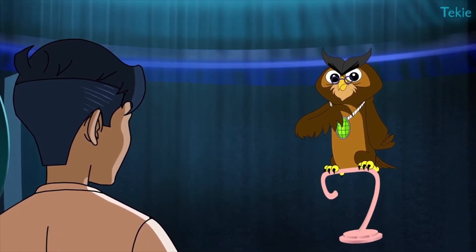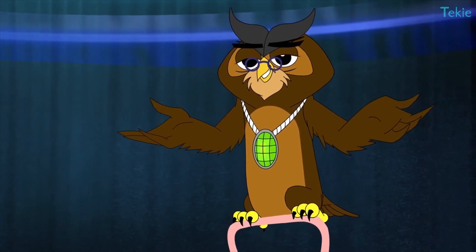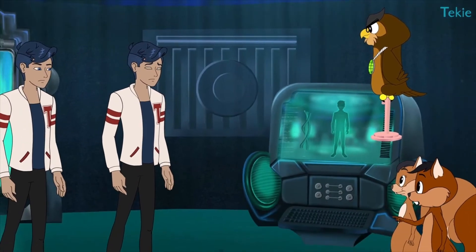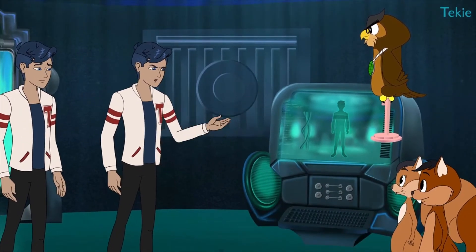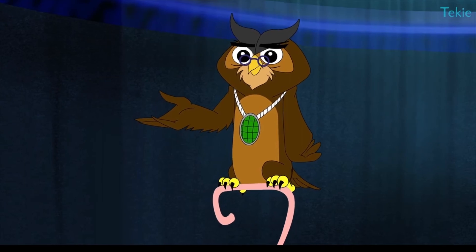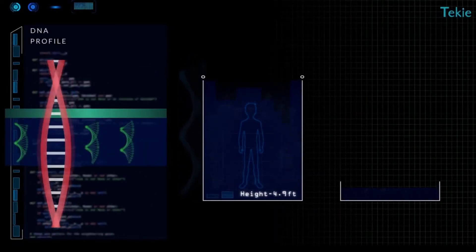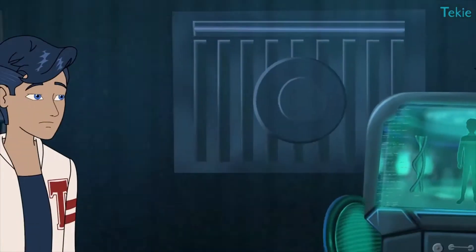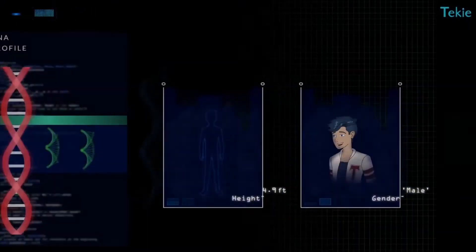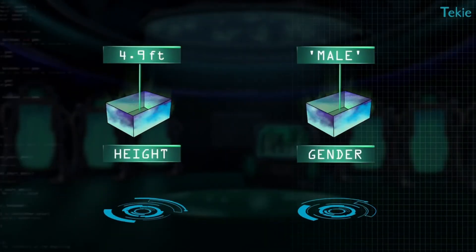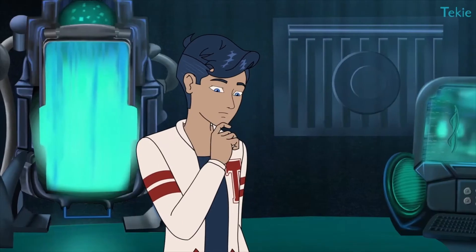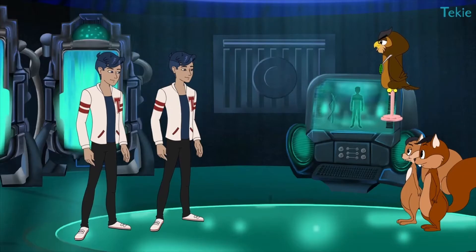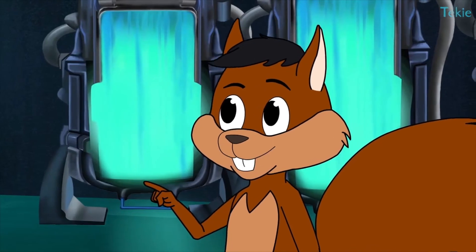Okay. Tell me the first thing that happened inside that machine. The light scanned me throughout. It scanned various features of yours. Features? As in your height, DNA, gender and many more. Cool! Then? Then it stored all that data. Stored? Oh! Stored in variables. Excellent! Well, go on. Name some features.